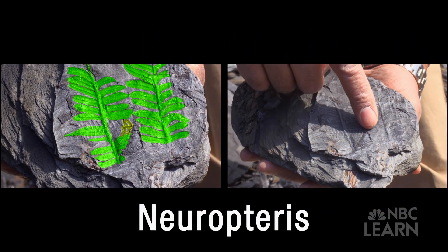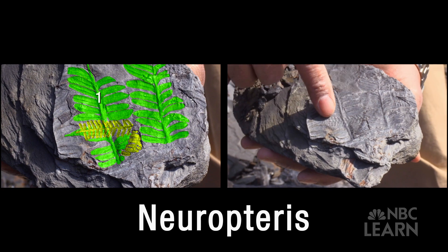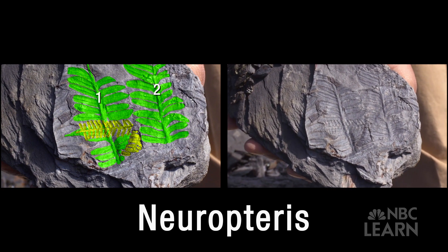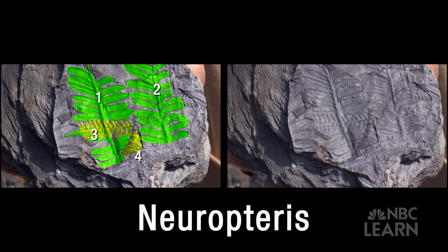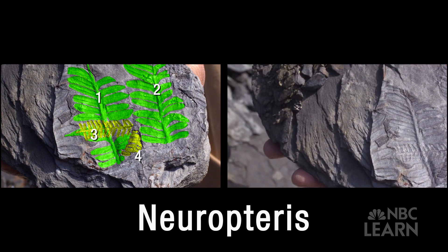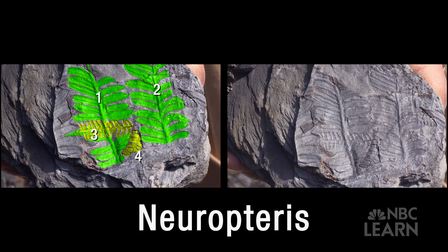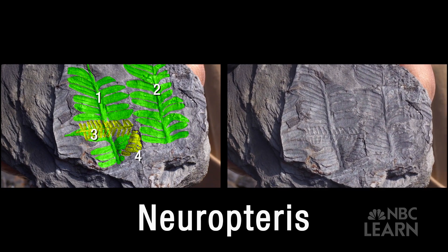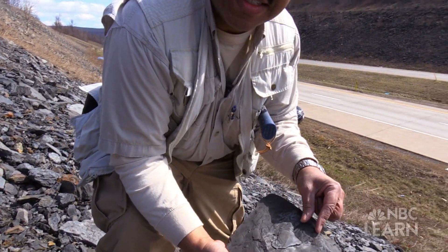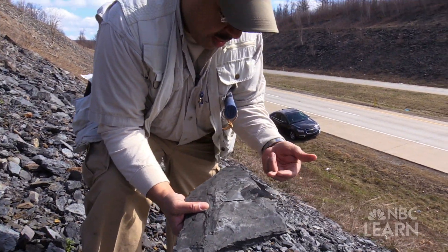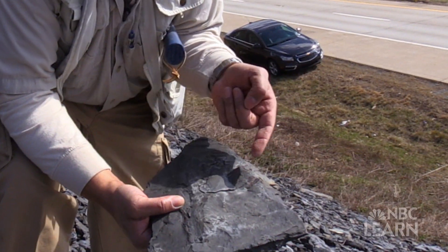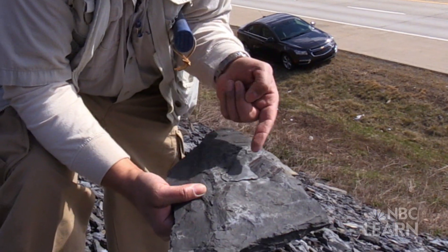We've got fern on top of fern. Look at that — we got one fern, another one, and then two little ones on top. This is beautiful. This is also Neuropteris. There is some kind of a plant stem that's maybe the thickness of two of my fingers that's plunging into this piece of shale here.